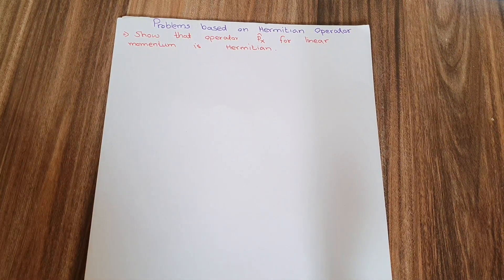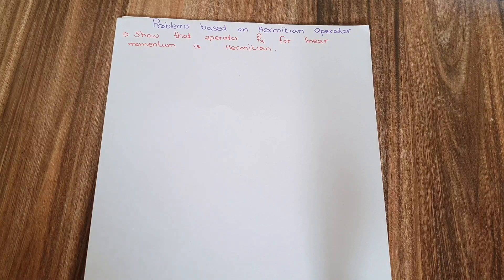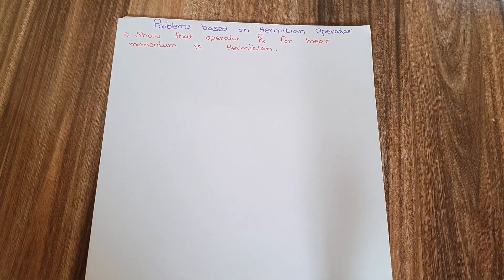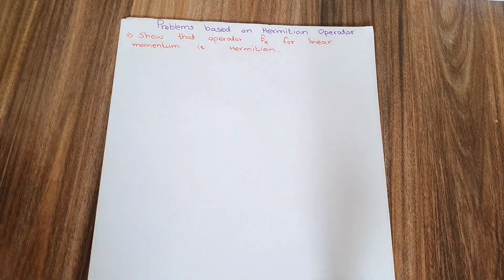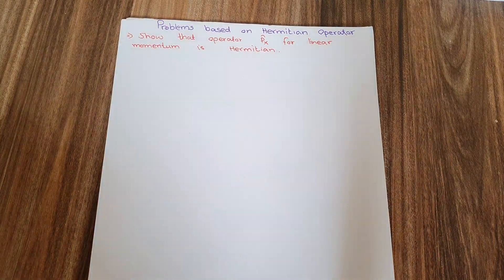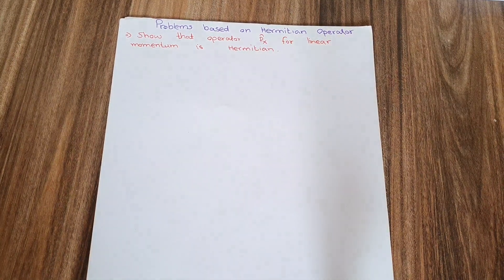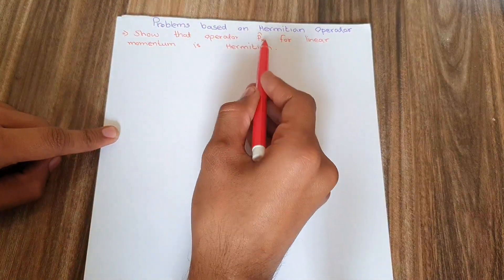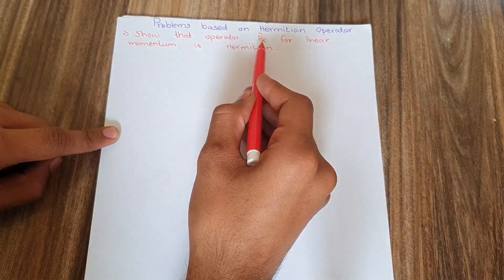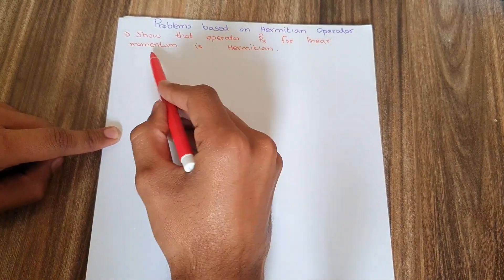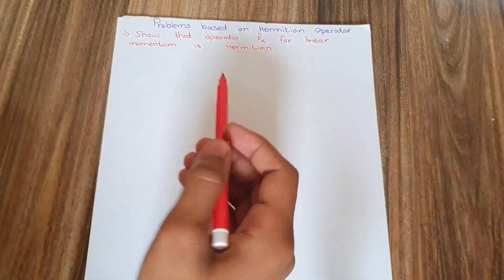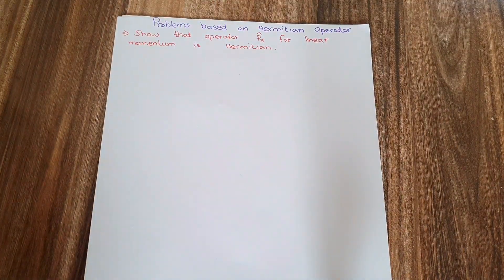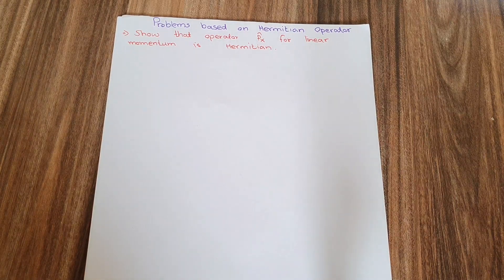Welcome YouTube viewers. Today in this video I am going to describe some problems based on Hermitian operators. The problem for today is we have to show that the operator px, the operator for linear momentum px, is a Hermitian operator. So we need to show that the operator px is a Hermitian operator.